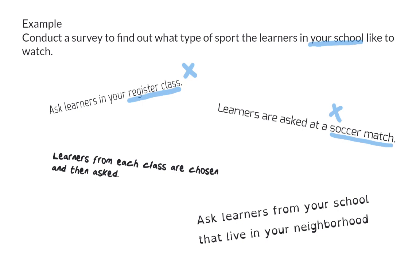Next option: learners from each class are chosen and then asked. This will be a representative sample as learners from each class in your school will participate. And finally, ask learners from your school that live in your neighborhood — this will also not be representative as there might be learners from other neighborhoods attending your school.